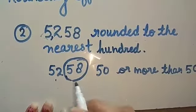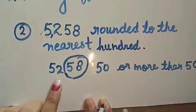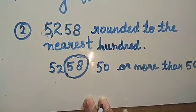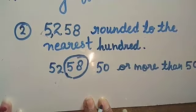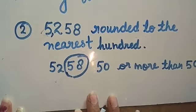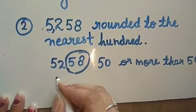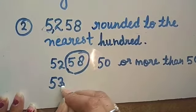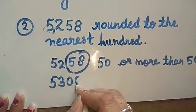Here, the number in the hundreds place is 2, so we have 200. After 200, the next hundred number is 300. So our answer is 5300.